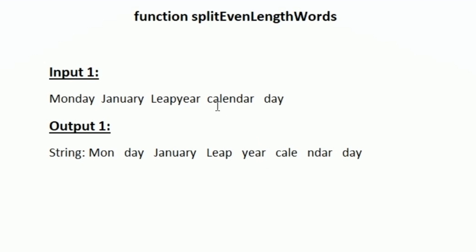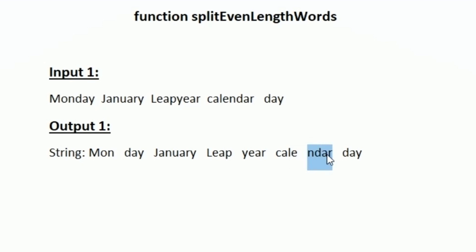The next word is 'calendar', which also has eight characters and is even length, so the first four characters form one string and the last four form another. The last word is 'day', which has three characters — odd — so we keep it unchanged. This is how we get our output.